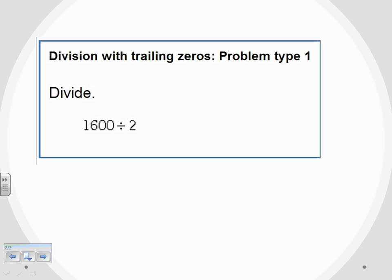So division with trailing zeros. The trailing zeros are the zeros behind the 16 here. So 1,600 divided by 2. We're asked to divide, and we're going to set this up by doing long division.